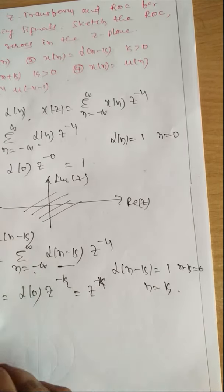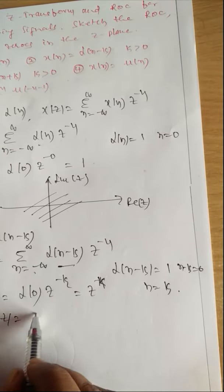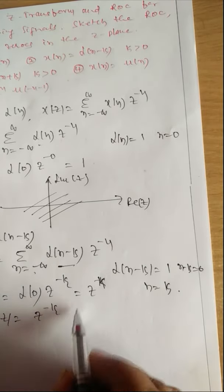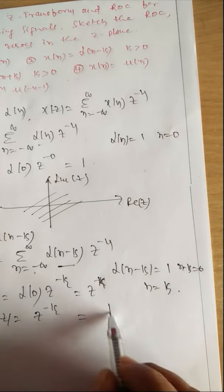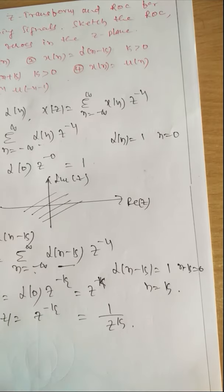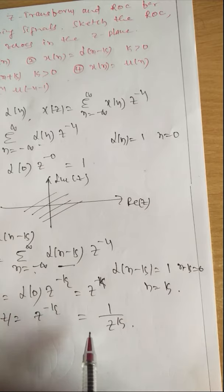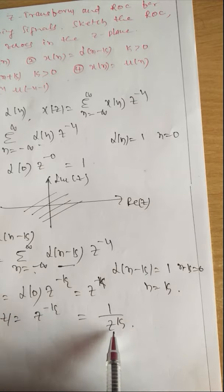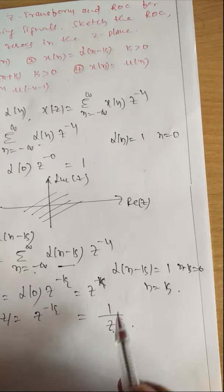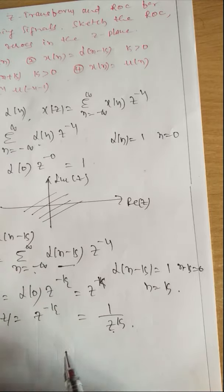So X(z) = Z^(-k), which can be written as 1 / Z^k. Its ROC is the entire Z-plane except at Z = 0, because when Z = 0, you get 0^k in the denominator, making X(z) go to infinity. For all remaining values of Z, it satisfies.